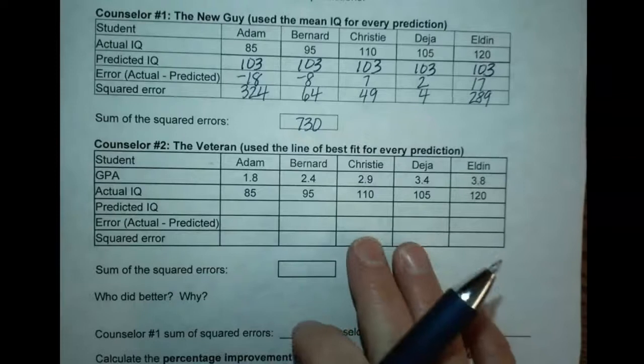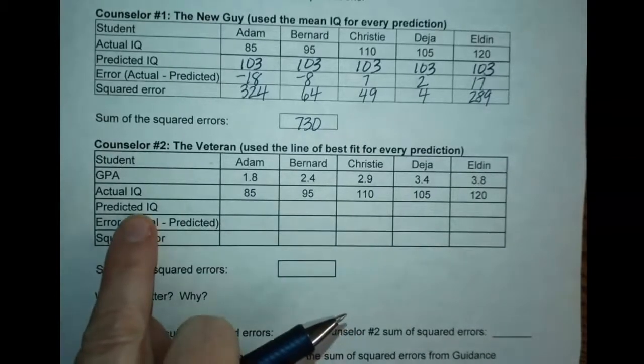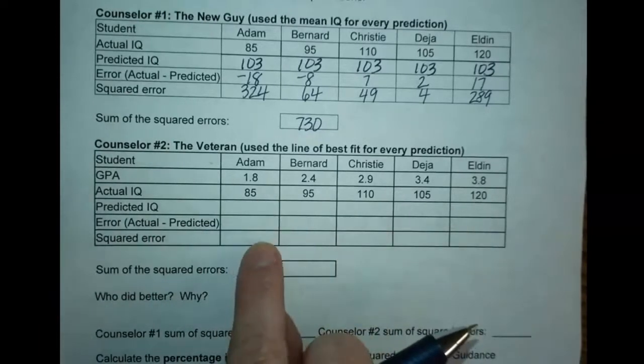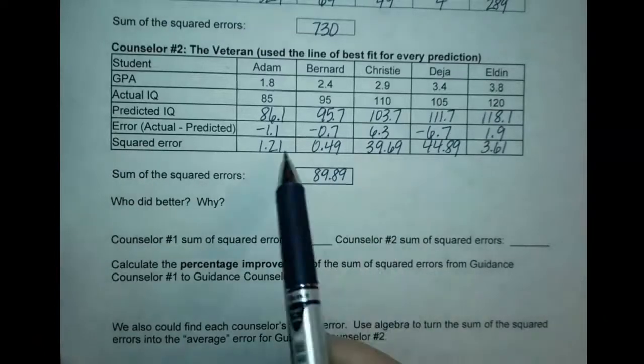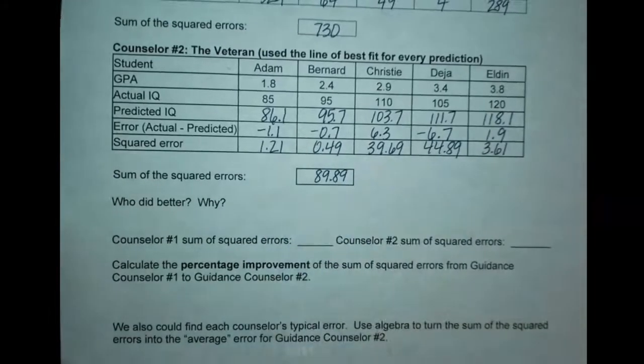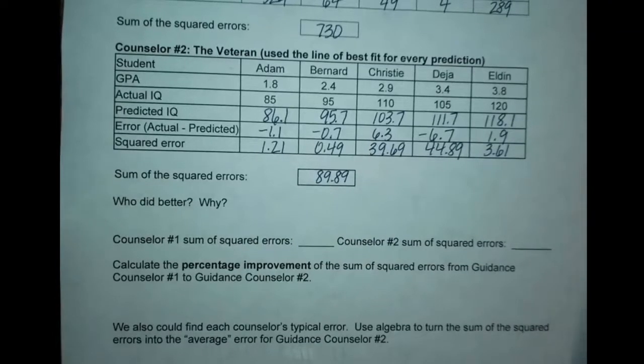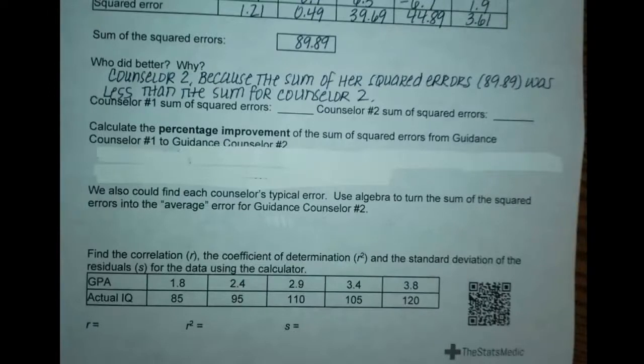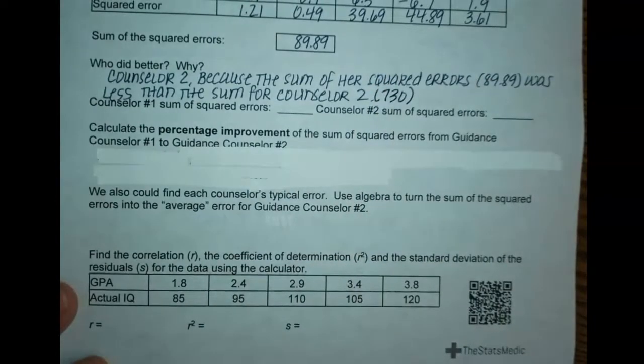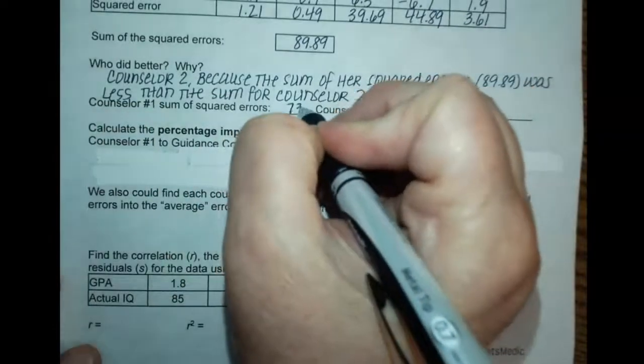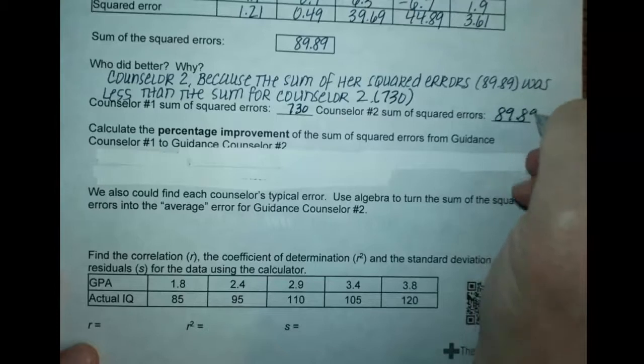Now do the same thing for counselor number two. Go to the front of the paper to predicted IQ, write them in here, find the residual, square the residual and find the sum. I took the squared residuals and added them up and got a total of 89.89 for the sum of the squared errors for counselor two. Counselor one's sum of errors was 730, for counselor two it was 89.89.